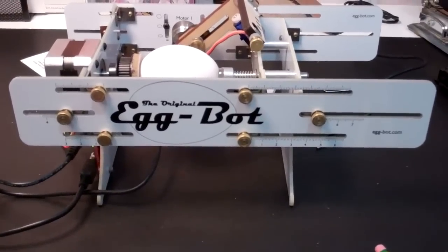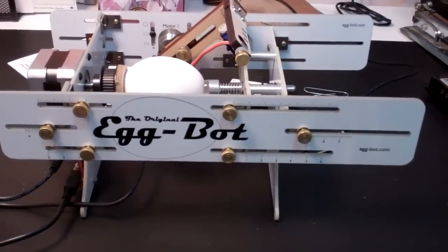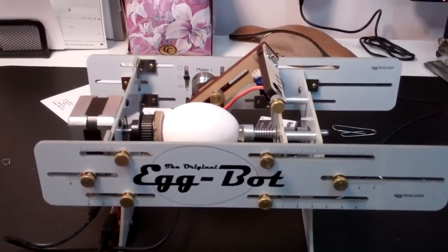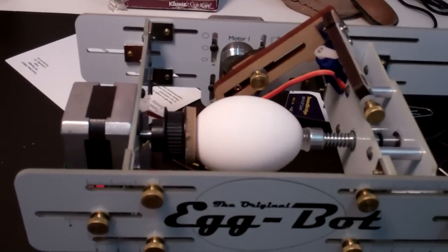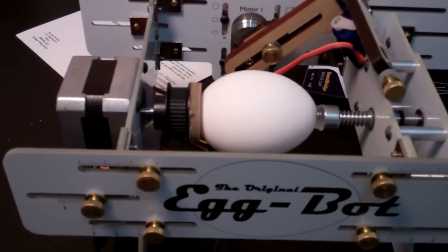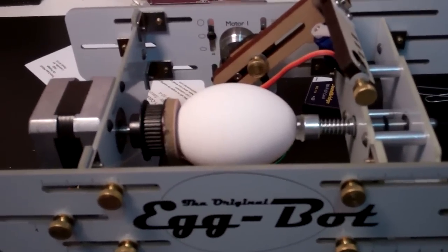All the parts are created by this company called Evil Mad Science, and that's where I got the parts. What it is, it's a plotter that works on round objects like eggs. And so here it is the day before Easter, and I've got my egg bot out.